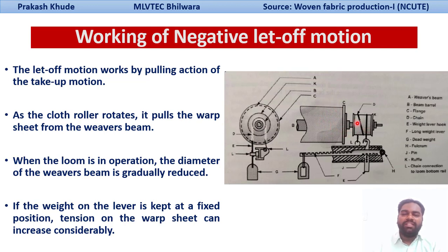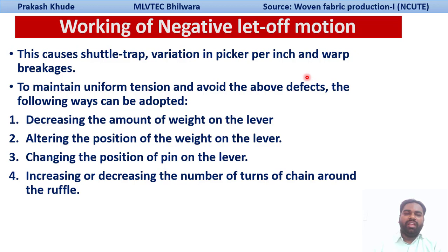So basically, we are controlling the releasing amount of your warp sheet from the warp beam. In negative let-off motion, unless and until the tension on the warp sheet has taken place, the releasing of the warp sheet has not been done. With the help of this weight and lever system, we are controlling the movement of your warp beam. If this is not done properly, it will ultimately cause shuttle trap, variation in picks per inch, and warp breakages.